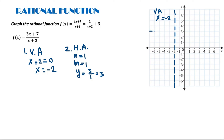Now I am going to draw the horizontal asymptote in the Cartesian system. This is the horizontal asymptote, which is y is equal to 3.